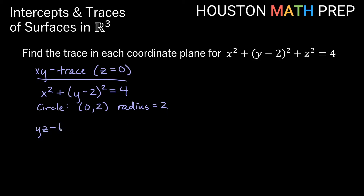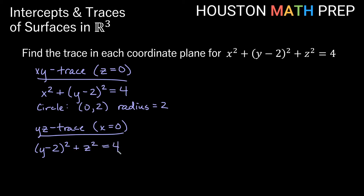Looking at our yz-trace — when we have the yz-trace, the other variable x is equal to 0. So our yz-trace has the x term zeroed out, leaving (y minus 2) quantity squared plus z squared is equal to 4. This is in the yz-plane where y is the horizontal axis and z is the vertical axis. This is again a circle, and with the y minus 2, our center is (2, 0) in the yz-plane with a radius of 2 units.